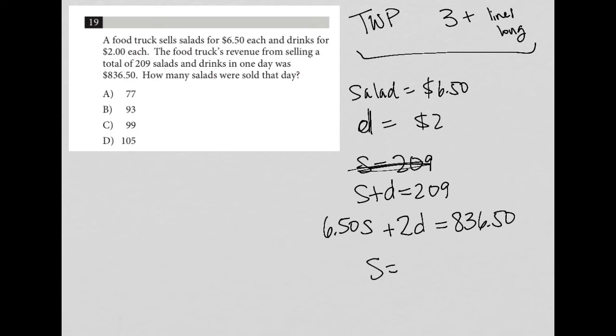So here's the two bits of information that I have. I know that all together there were 209 total salads plus drinks. And then here's the amount of money that was made. This is a system of equations. And this happens a lot on this test.